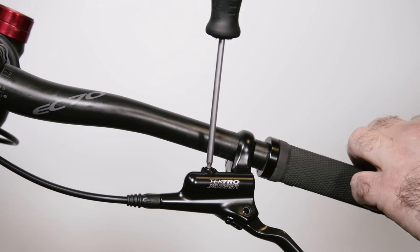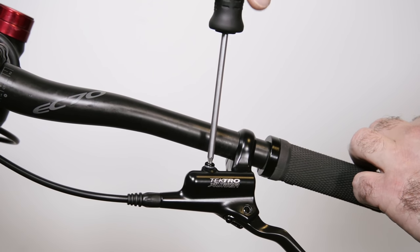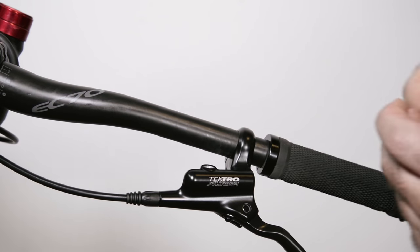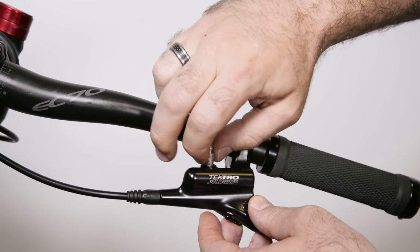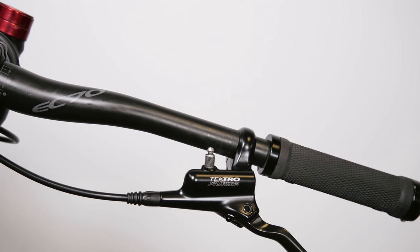Use the same T15 screwdriver to remove the bleed port screw from the lever. Then screw in the bleed port fitting and attach an overflow hose with a container or bag to catch the excess fluid.